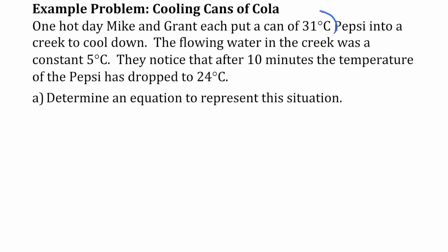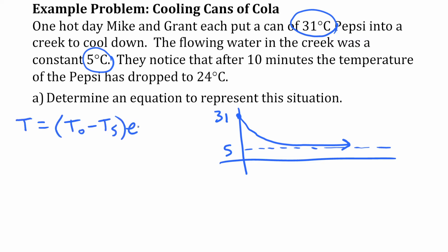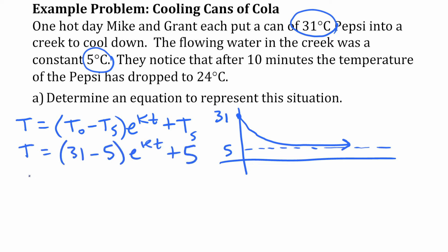We have a situation where we have a 31-degree drink and we're going to put it into a creek that is 5 degrees. We have 31 degrees at the start and the ambient temperature of 5 degrees, and as time goes by that temperature drops closer and closer to 5. Substituting those values into our equation, we simplify to get T = 26e^(Kt) + 5.